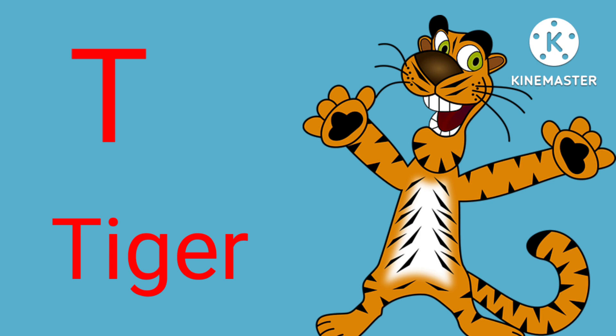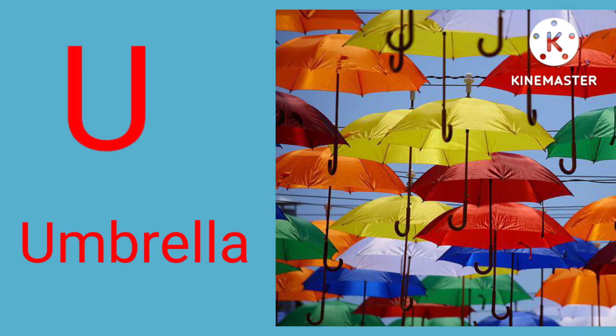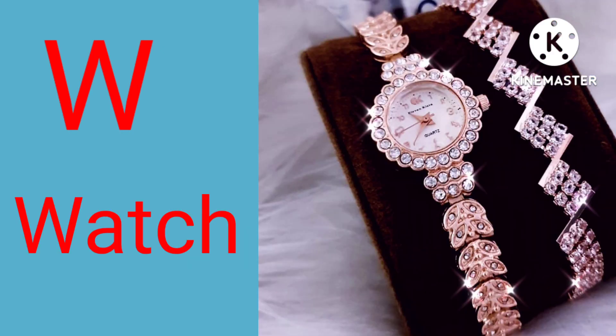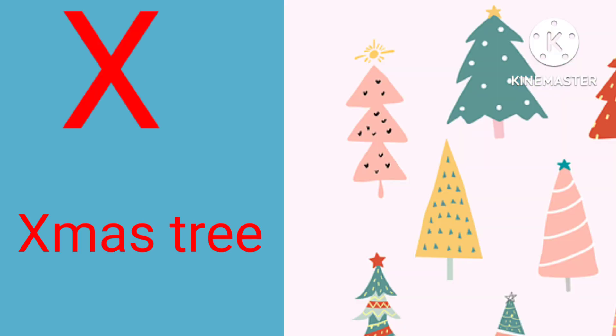T for tiger, U for umbrella, V for vulture, W for watch, X for Christmas tree.